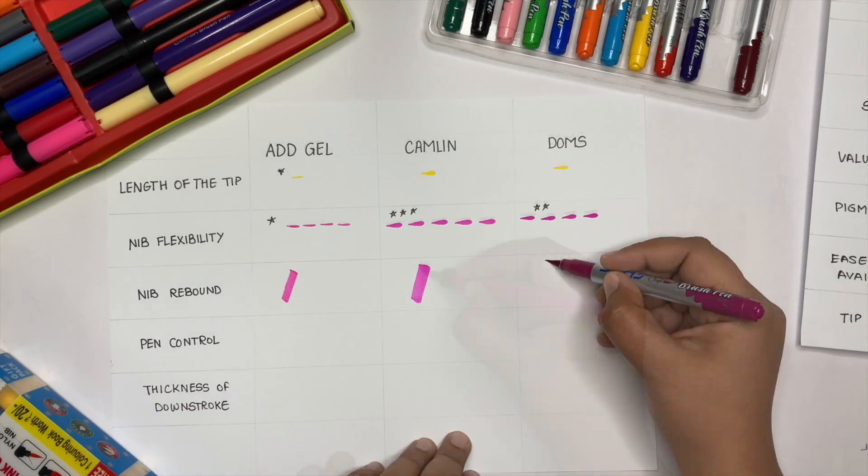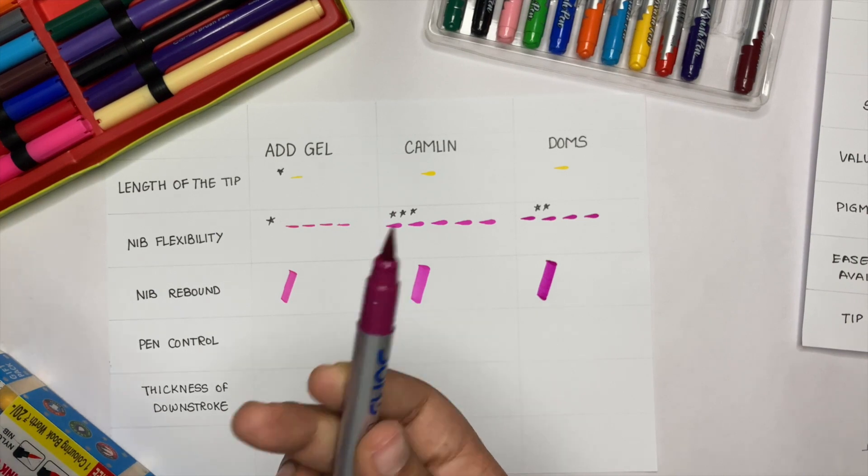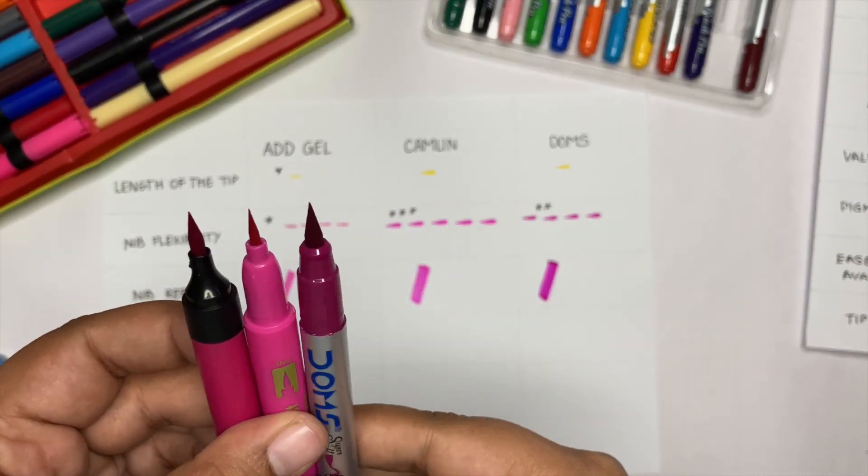First is the length of the tip. Rebound is the ability of the nib to bounce back to its original state after applying pressure. DOMS has the best nib rebound.